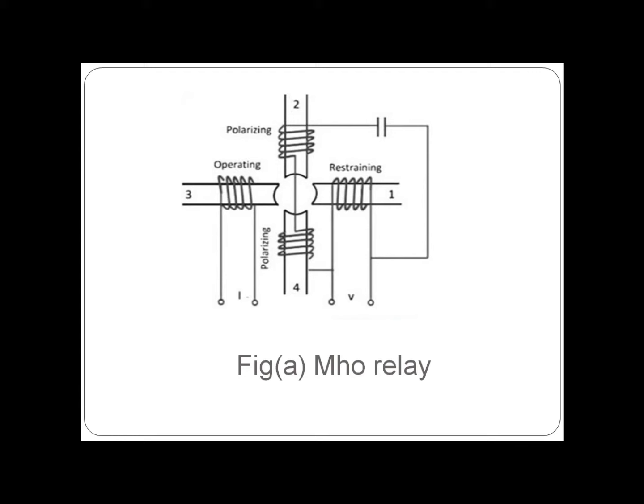If the impedance measurement is less than the final point impedance, then it is considered as a fault that exists on the line between the relay and the final point.